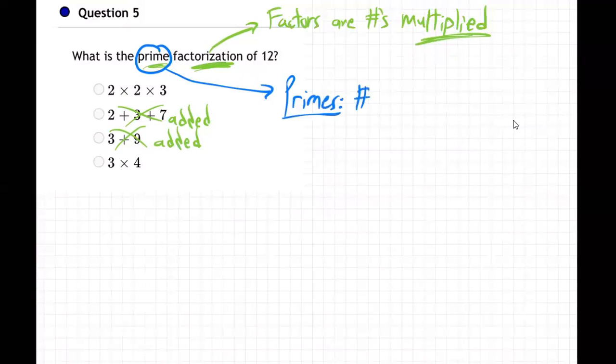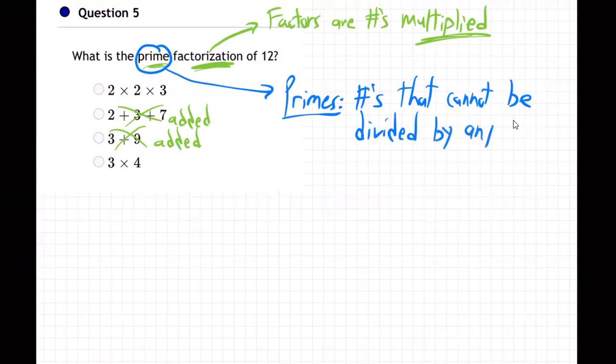Primes are numbers that cannot be divided by any other number except one. Of course, one goes into all numbers, right? Primes are those numbers.